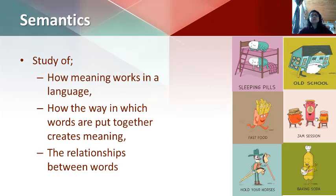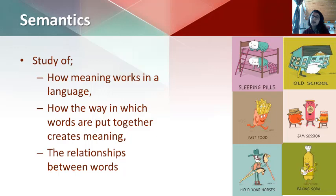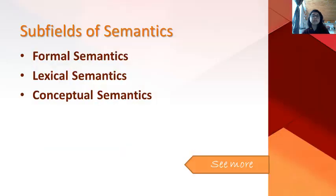Then let's move on to what semantics is. Semantics is the study of the meaning of words, phrases, and sentences. It deals with how meaning works in a language, how the way in which words are put together creates meaning, and the relationship between words. It has three sub-fields: formal semantics, lexical semantics, and conceptual semantics. To get more information, you can click here.